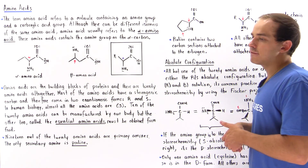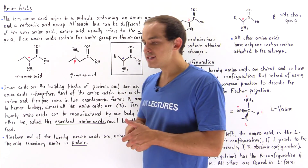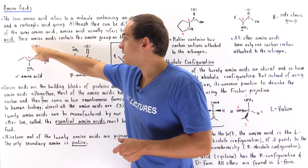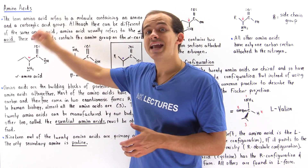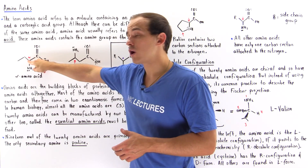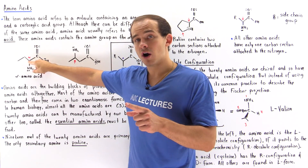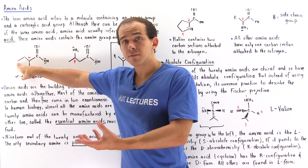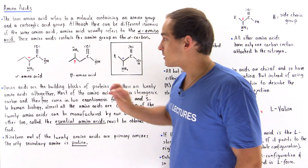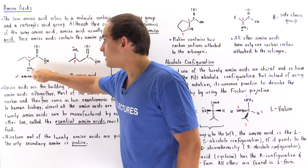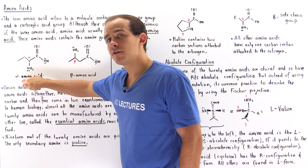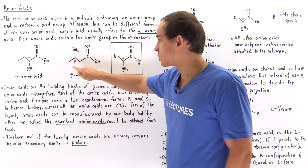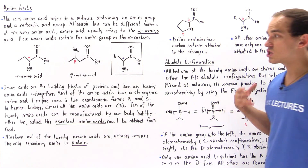What exactly is an alpha amino acid? Recall that whenever we have the carbonyl group — the carbon-oxygen double bond — the carbon right next to it is the alpha carbon, the next carbon across is the beta carbon, and the one after that is the gamma carbon. If the amino group is attached to the alpha carbon, that's the alpha amino acid; if it's attached to the beta carbon, that's the beta amino acid, and so forth.